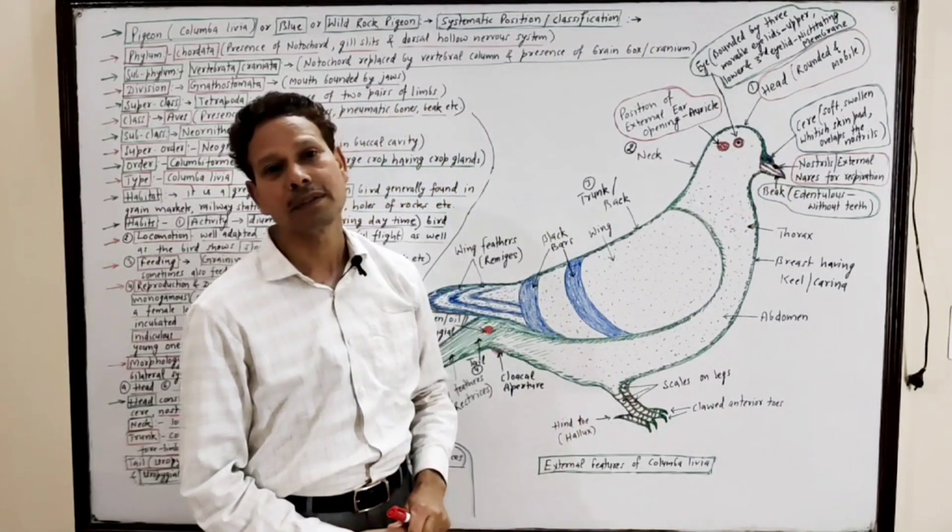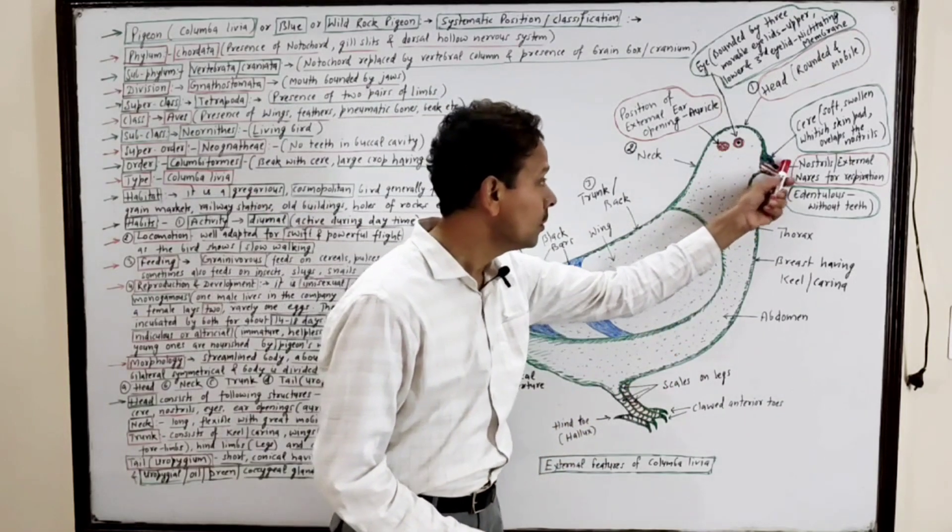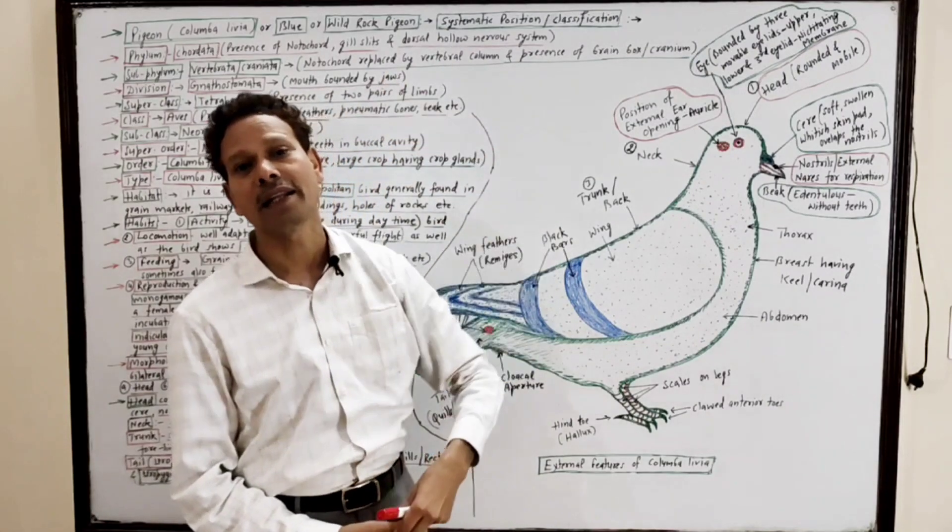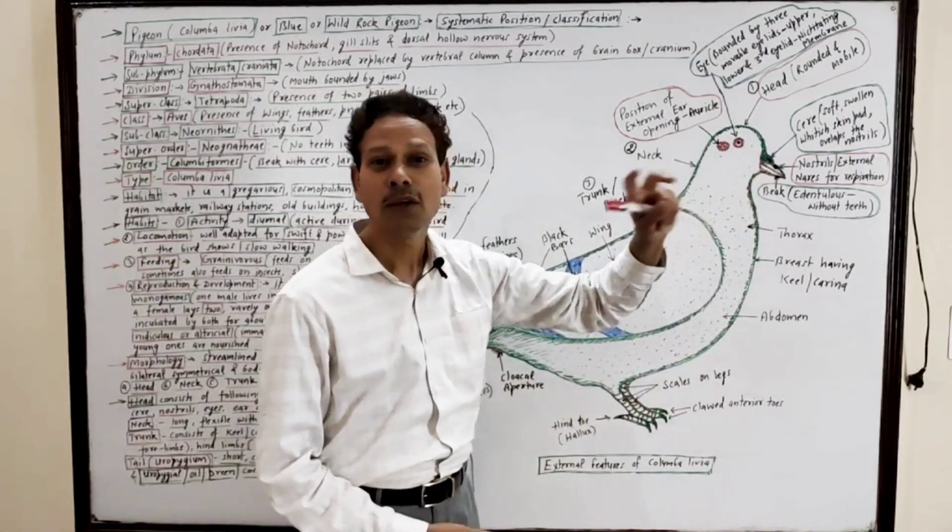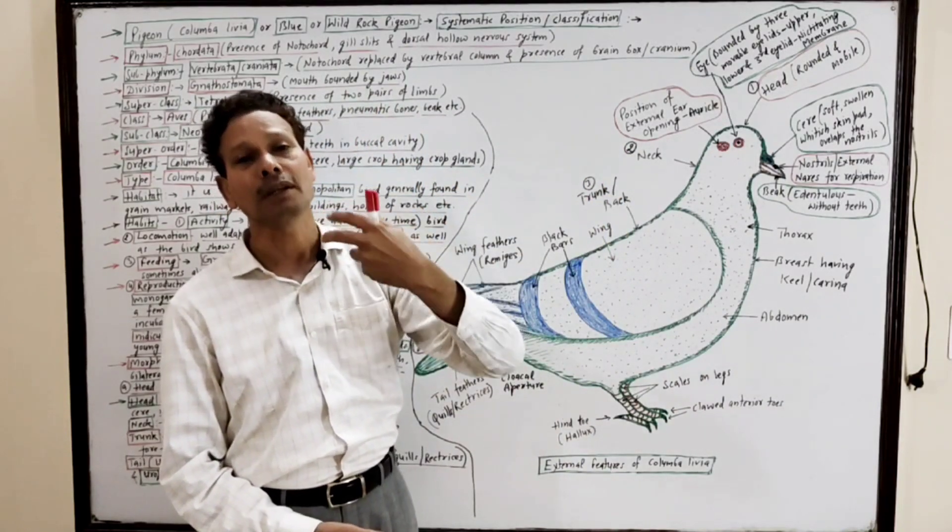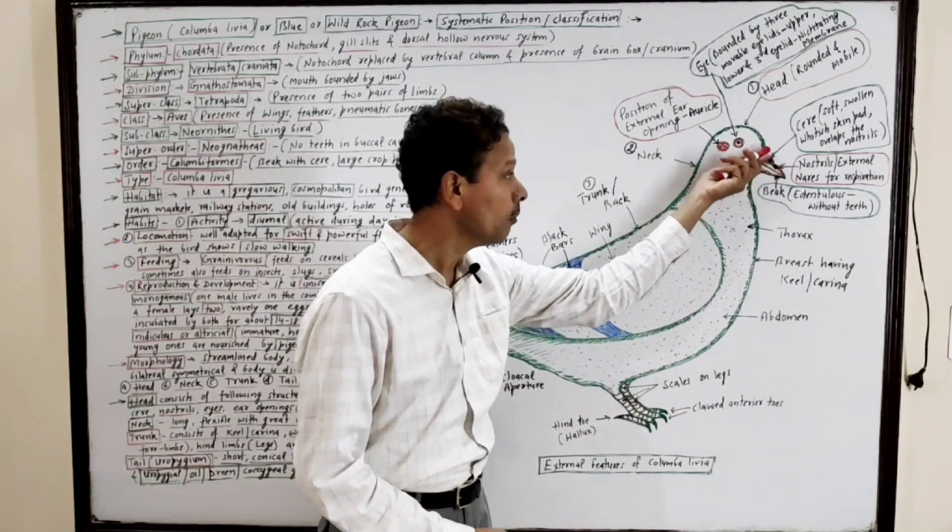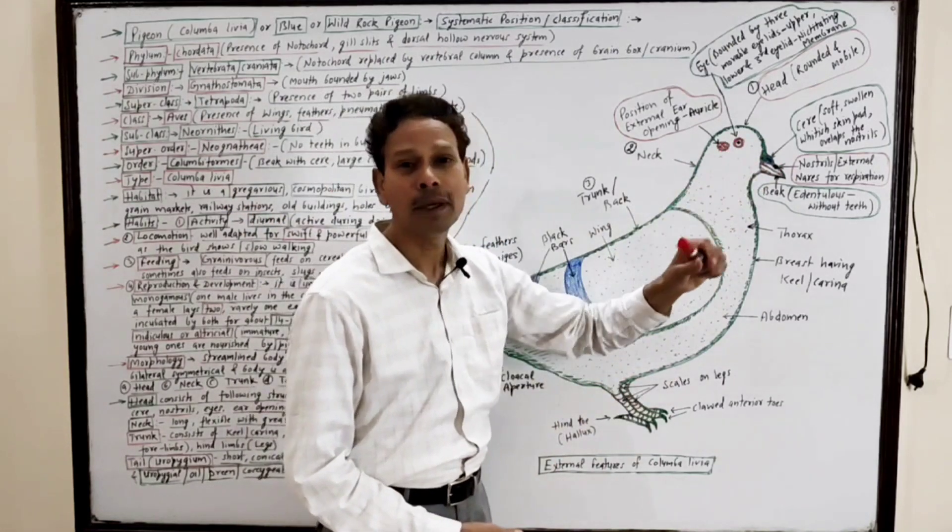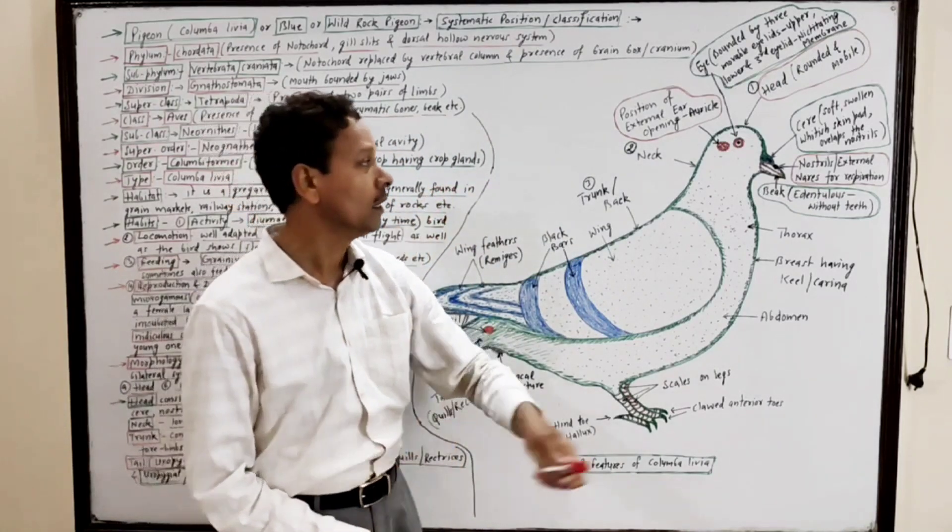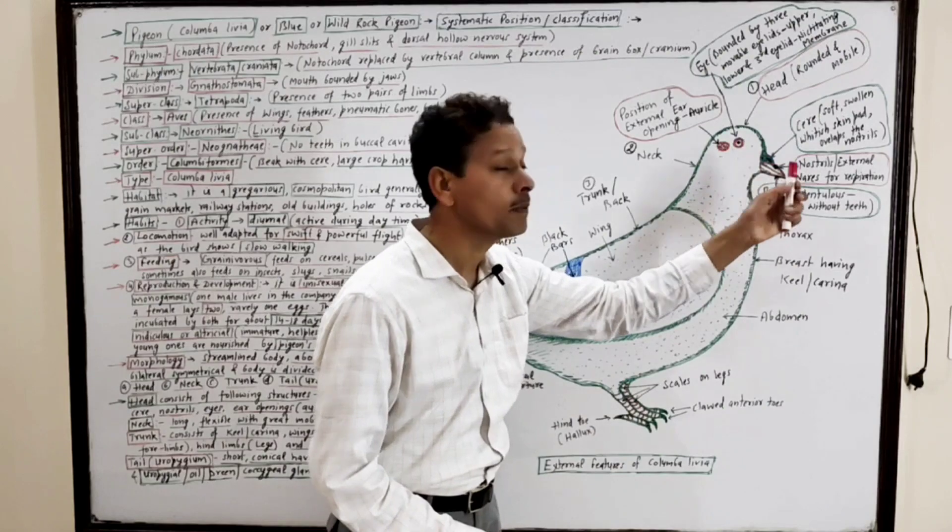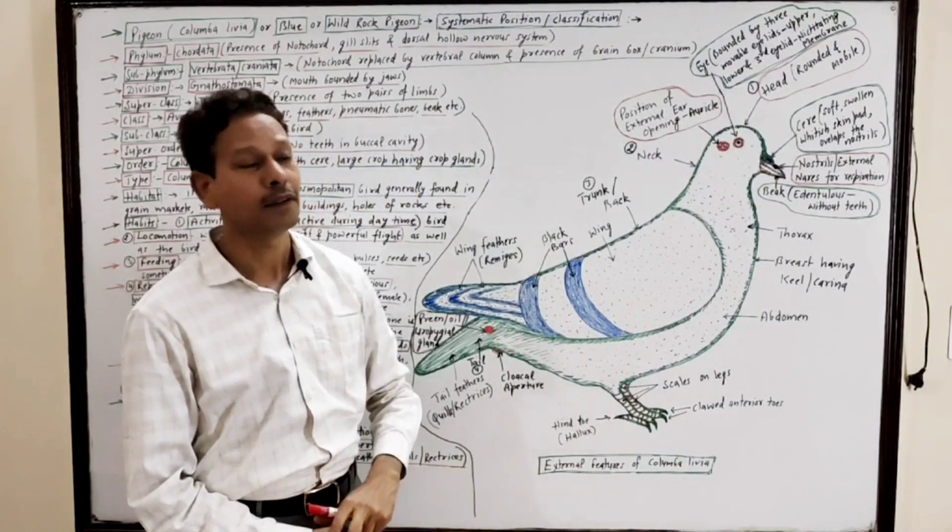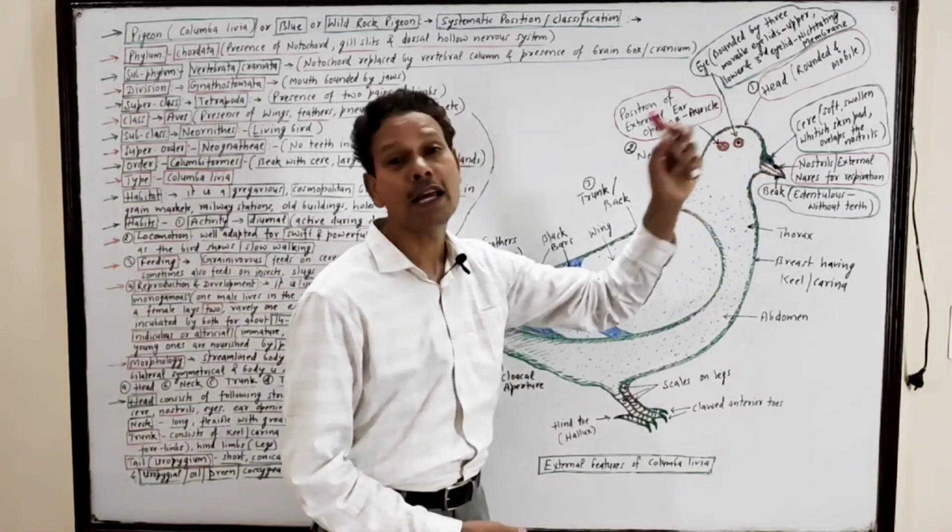Mouth and beaks. On this upper beak a pair of cut slits are there - these are nostrils or external nares which help in inhalation, in breathing. Just above this upper beak a soft fleshy white skin pad is there, and that pad which overlaps both nostrils is cere, C-E-R-E.